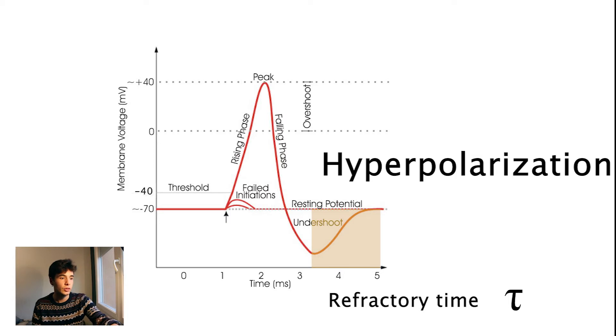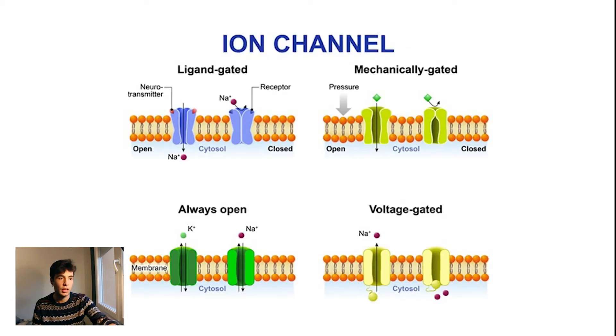The way neurons do this is thanks to their ion channels. An ion channel is a membrane protein that separates the inner part of a cell, in this case a neuron, and the outside, and it allows ions to pass through.